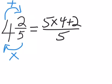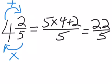When we do the arithmetic we get five times four is twenty plus two. Twenty-two fifths. Congratulations. You are an expert in turning mixed fractions into improper fractions.